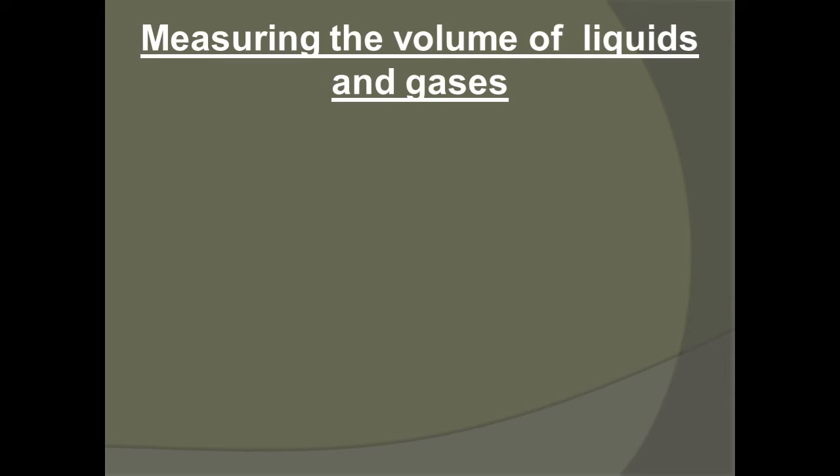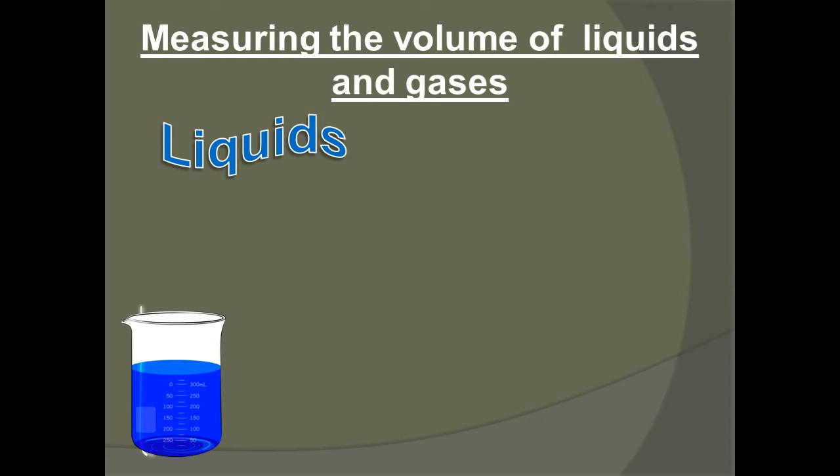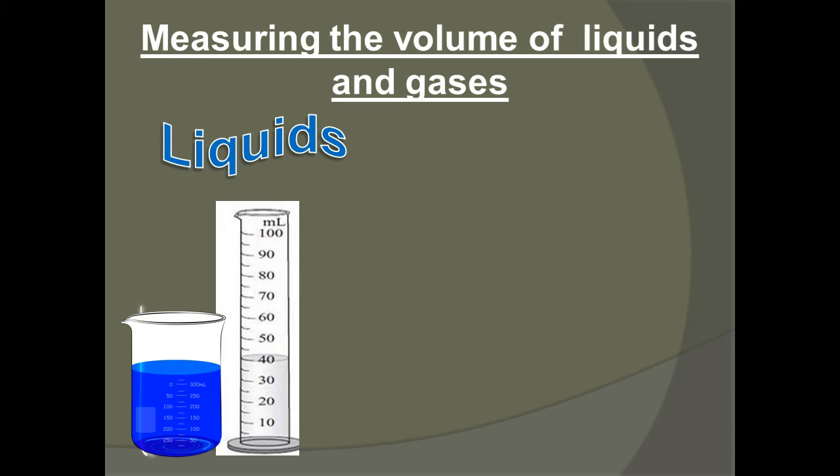Let's start by talking about measuring the volume of liquids and gases. Measuring the volume of liquids is actually really easy. In science, we use things like beakers, graduated cylinders, and pipettes, which are basically a fancy version of an eyedropper.